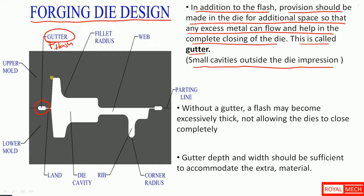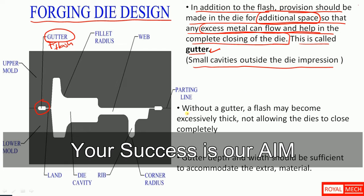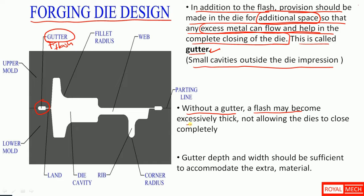In some cases we will use the gutter. It is an additional space so that any excess metal can flow and help in the complete closing of the die. Without a gutter, a flash may become excessively thick, not allowing the dies to close completely. So this is about gutter.